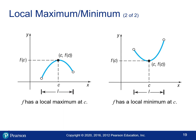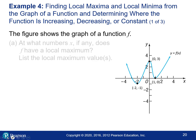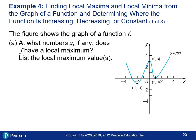Similarly, a local minimum is the lowest point in a neighborhood where all other y-values are either equal to it or bigger. Here's an example graph with a local maximum — in this neighborhood this is the highest point, so the local max value is the y-value at that point. And here's a local minimum — in this neighborhood this is the lowest point.